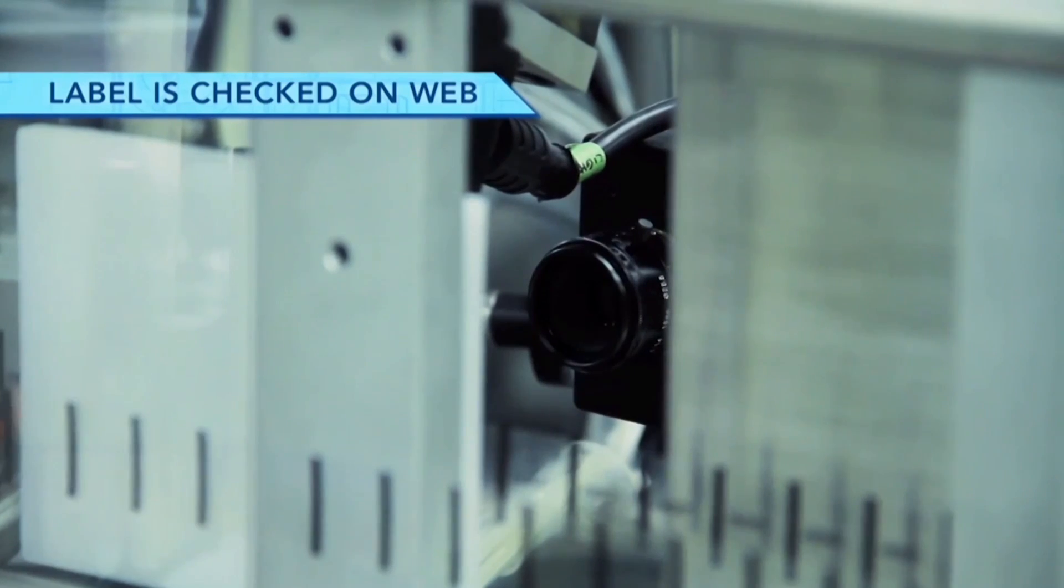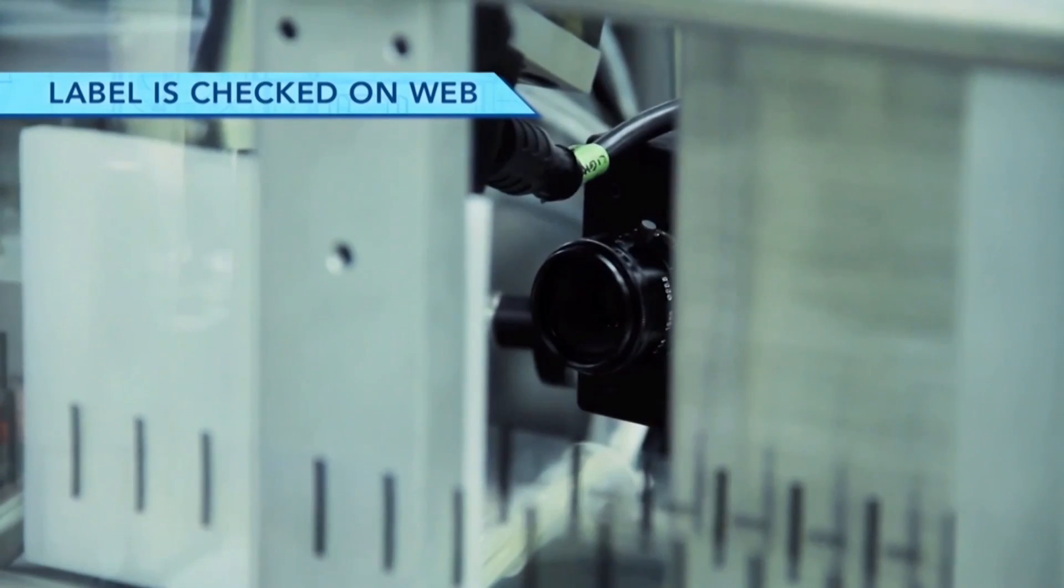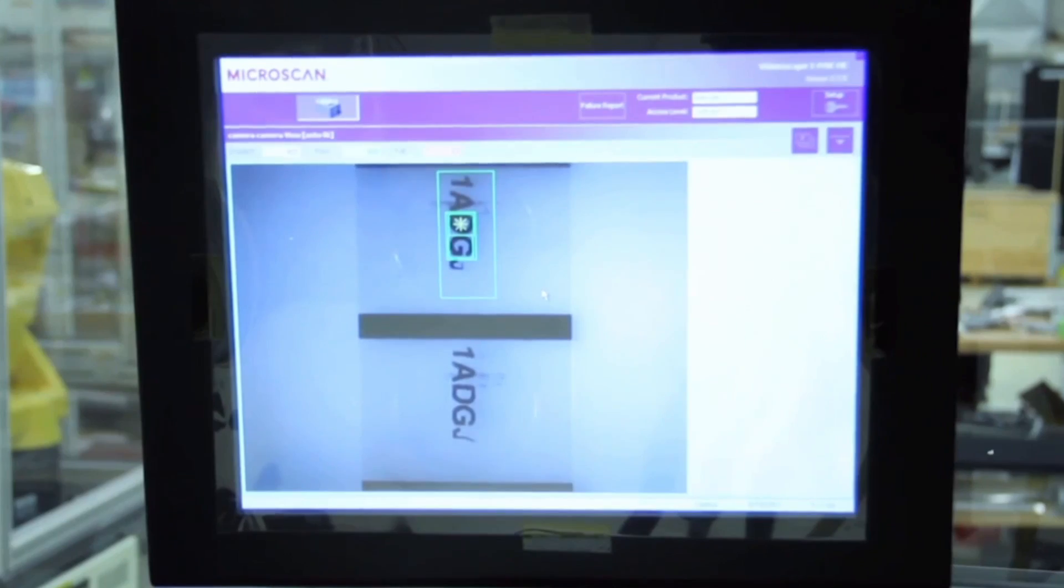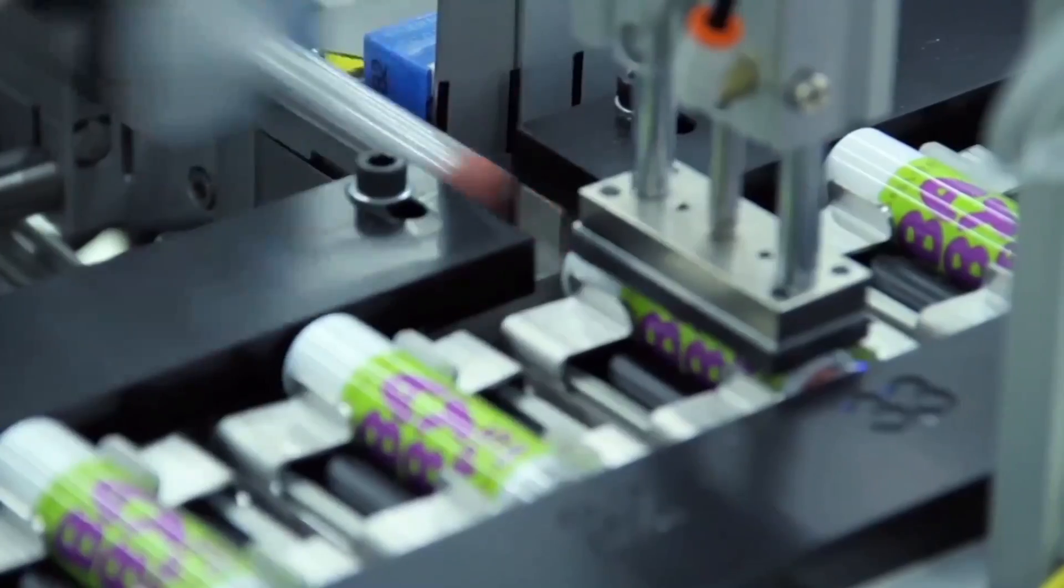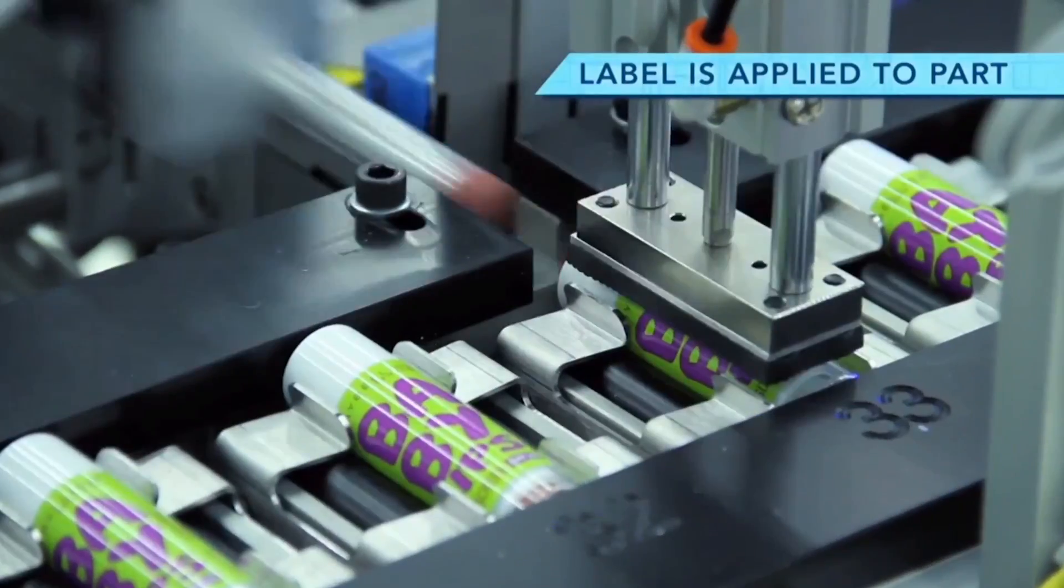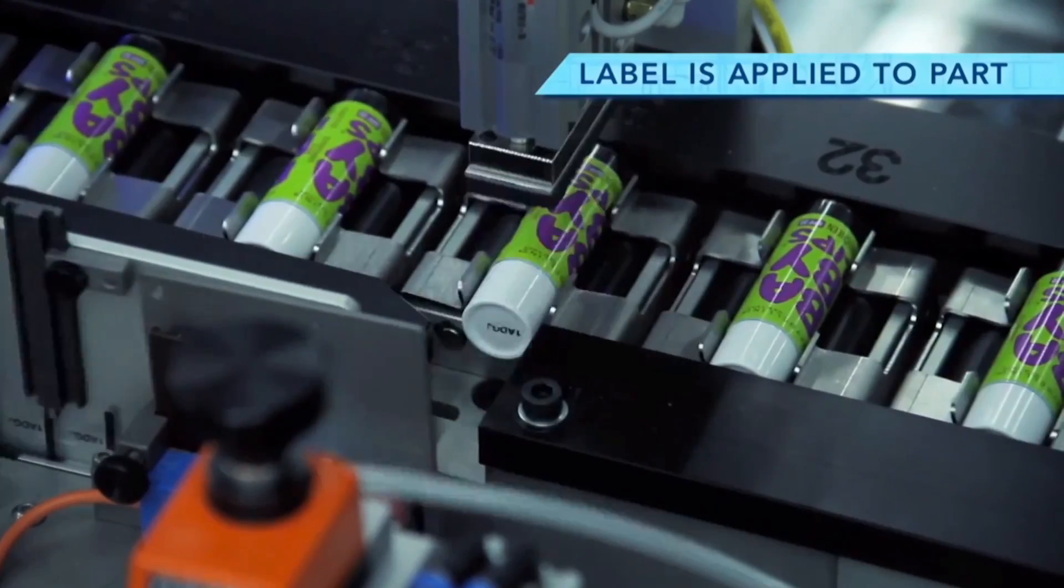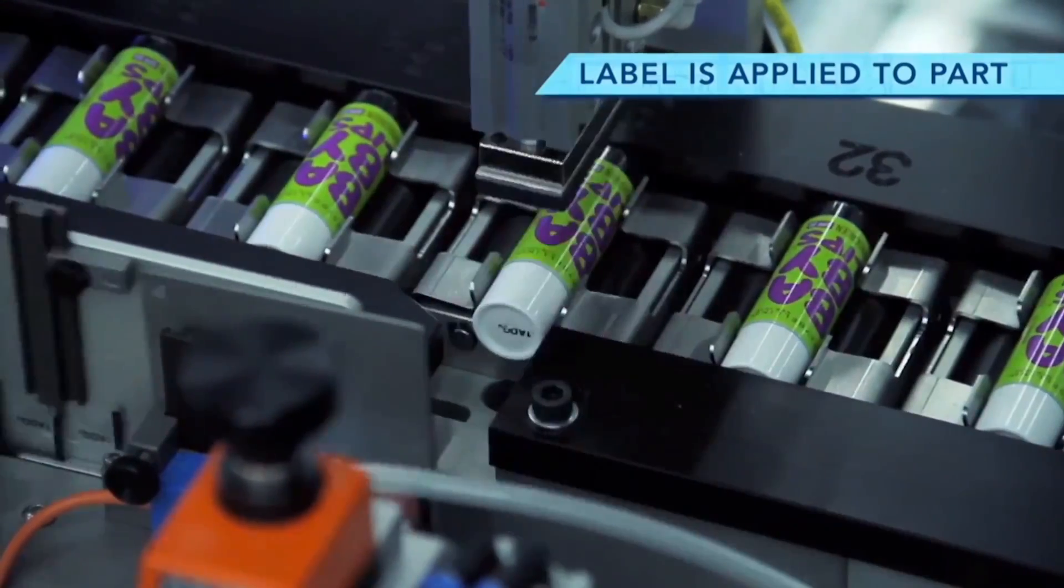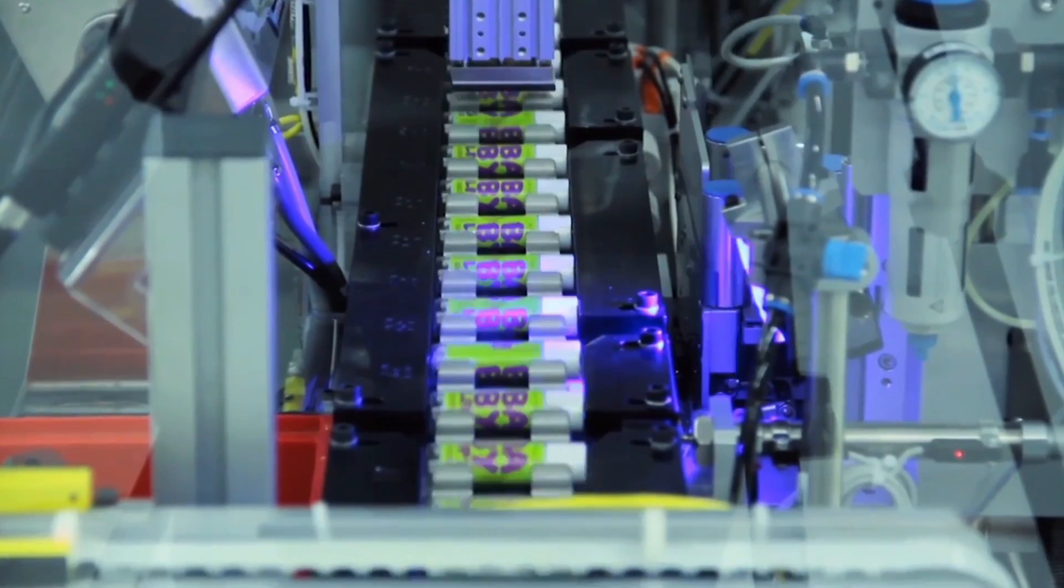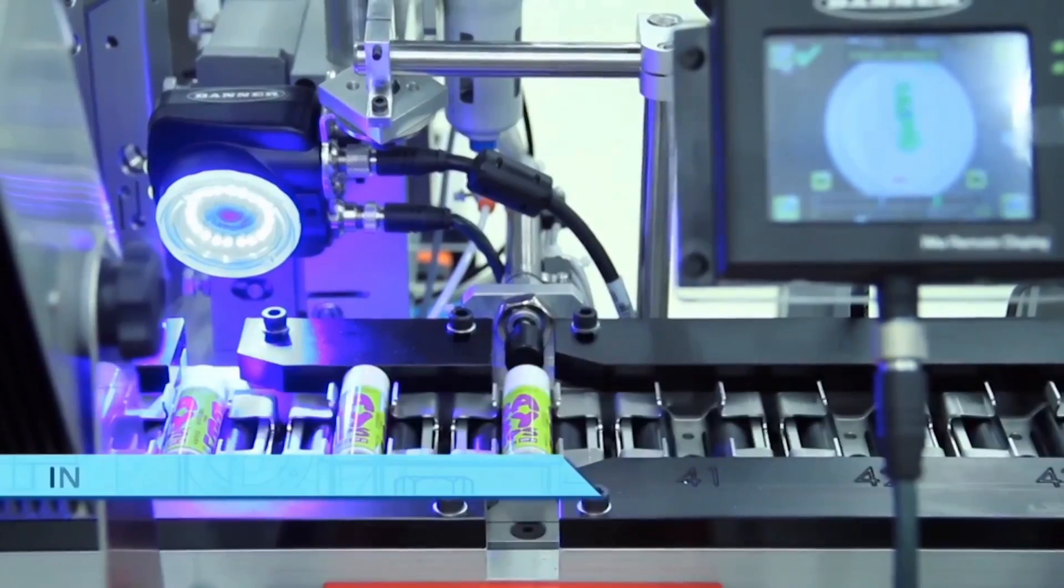A second HERMA labeler places a label on the end of the part. Each label is first checked before being placed onto the cosmetics, and a second camera inspects and verifies the label after placement.